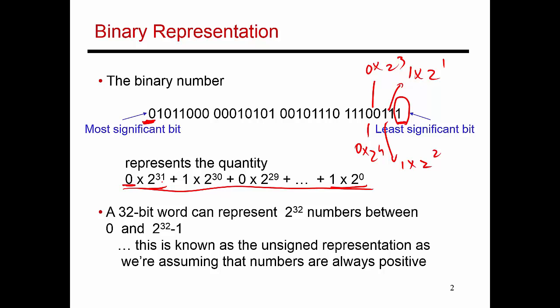What is the largest number I can represent? If all the bits are 1, that gives me 1 times 2 to the 0 all the way up to 1 times 2 to the power 31, which gives a value of 2 to the power 32 minus 1. The smallest number would be 0. This is referred to as an unsigned representation because I haven't yet talked about the convention to represent a negative number. With this representation, I can only represent positive numbers from 0 up to 2 to the power 32 minus 1.